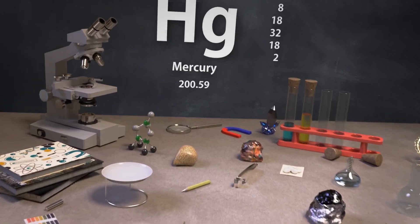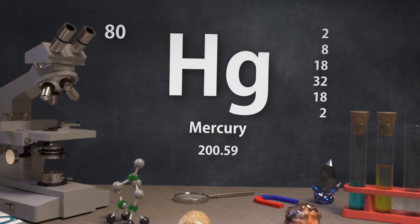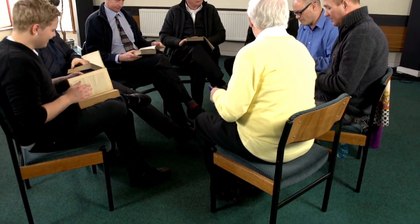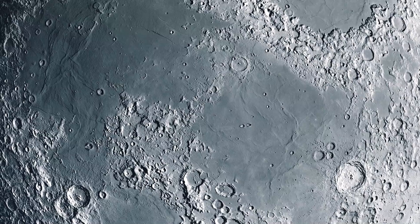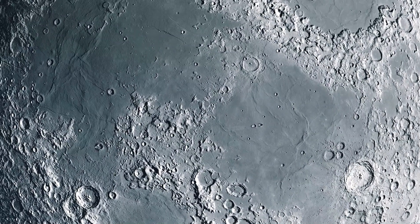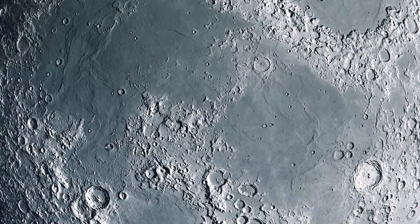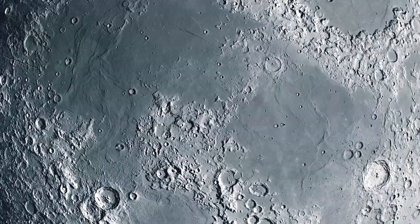Equipped with three ion engines, Dawn was able to embark on a journey that began with a 14-month study of Vesta, the second largest asteroid in the asteroid belt. After completing its mission at Vesta, Dawn began the second, and perhaps most exciting, part of its journey.